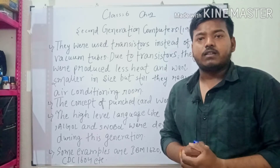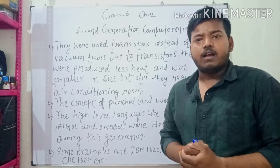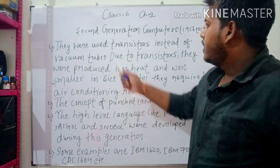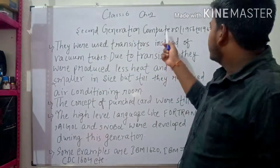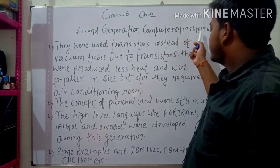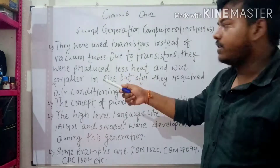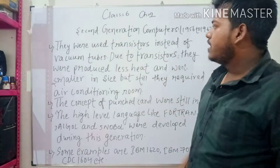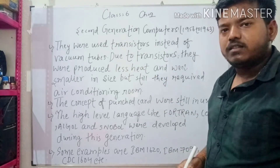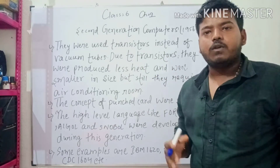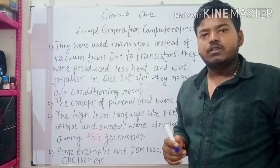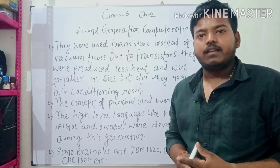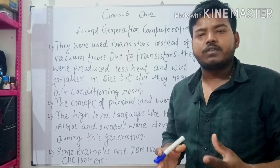This is Chapter 1's second video. Today we will study Second Generation Computers. Second Generation Computers were from 1956 to 1963. They used transistors instead of vacuum tubes. This computer had less heat produced compared to First Generation Computers, but it was still kept in an air-conditioned room.